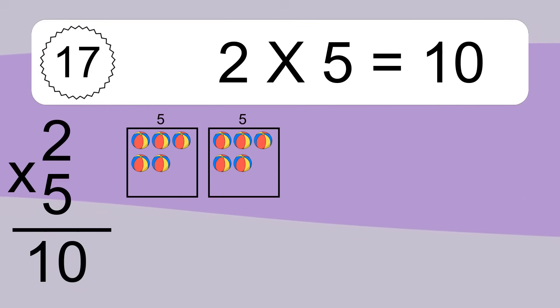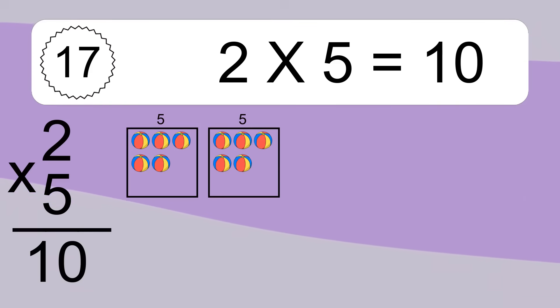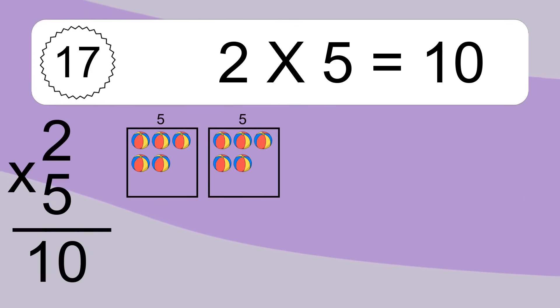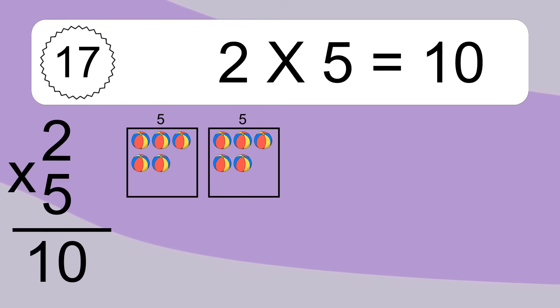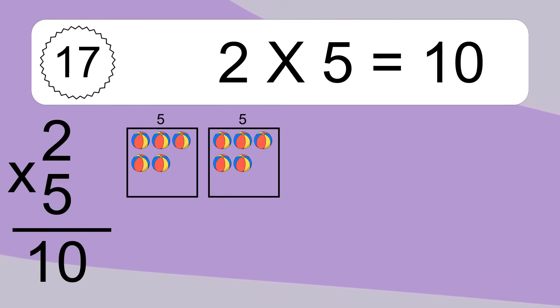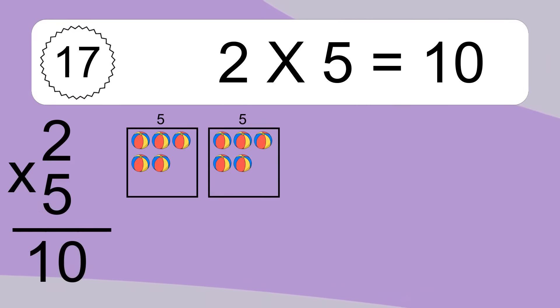2 times 5 equals 10. We have 2 boxes, and each box has 5 colorful balls inside. If you count all the balls in all the boxes together, you will have 2 times 5 balls. This equals 10 balls.